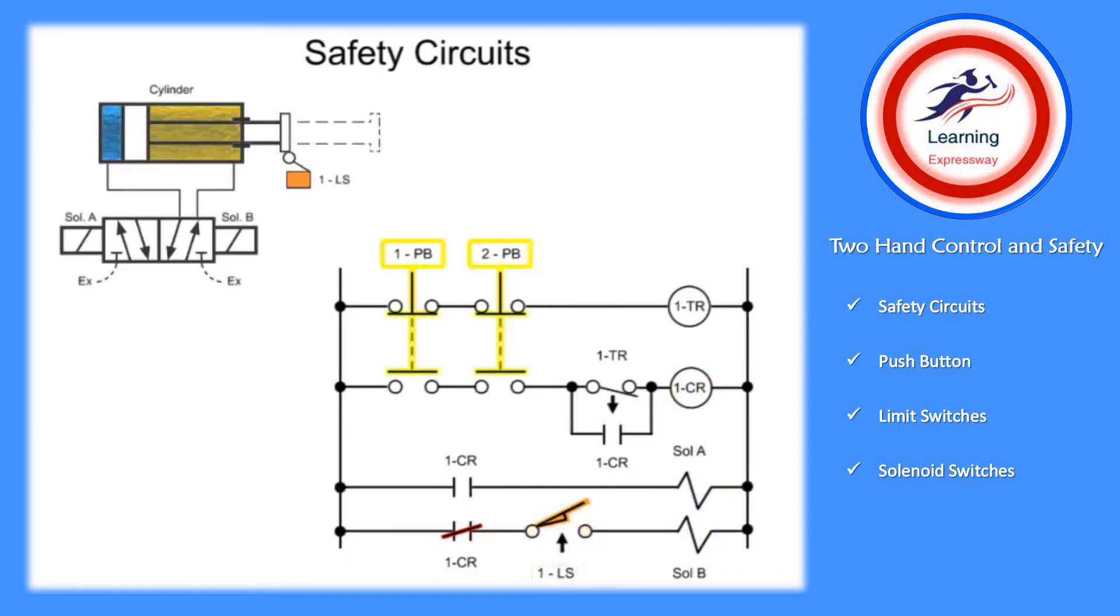When both push buttons are in the unactuated position, the timing relay is energized and the normally open-timed open-timer contact is shut. No power can flow to the control relay. If an operator depresses a single push button, power to the timing relay is removed and the off-delay timer starts to time.